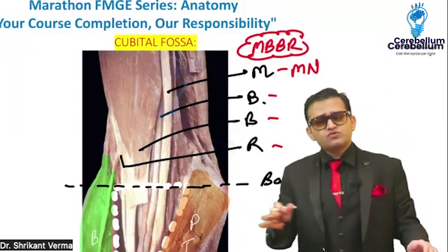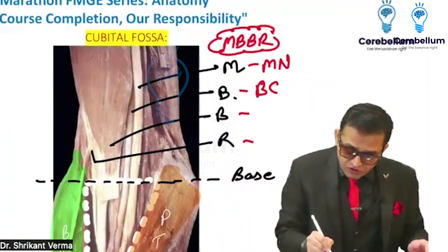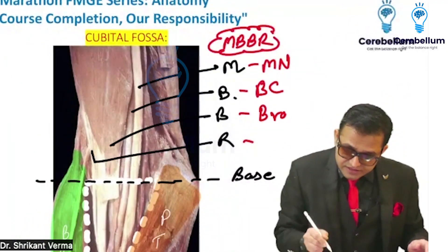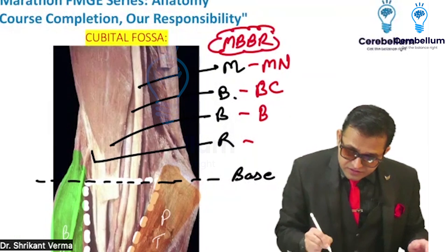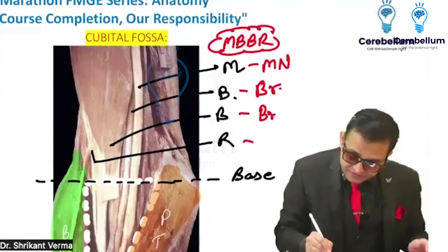For FMG exam questions, questions are always asked about the contents. B for biceps tendon, B for brachial artery — remember this is the brachial artery.